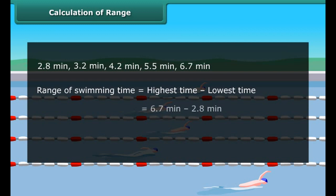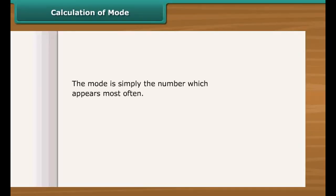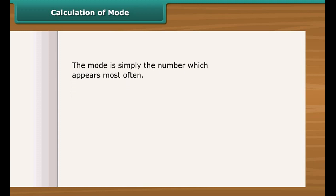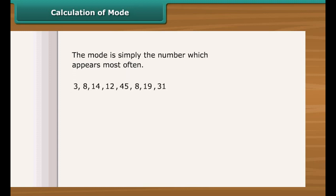Five participants completed their swimming race. Can we calculate the range of swimming time from this data? Yes, it's simple. First, order the data from least to greatest. Now subtract the least value of time from the highest. So the range of swimming time is 3.9 minutes.